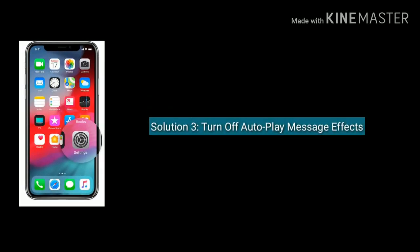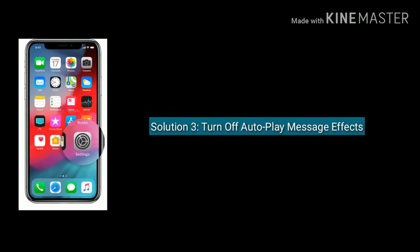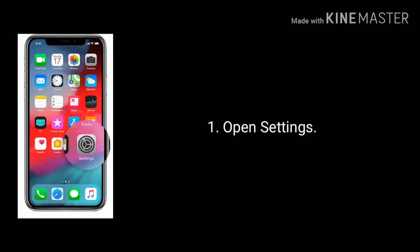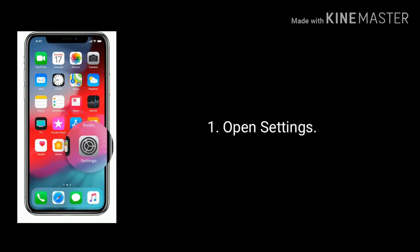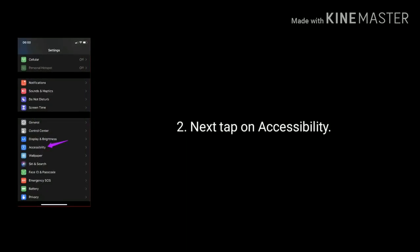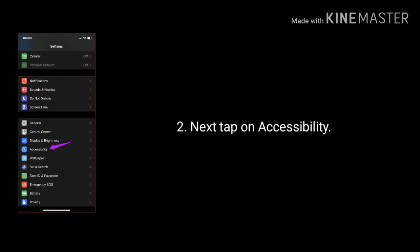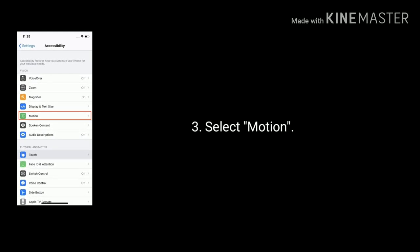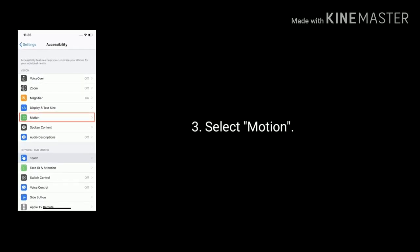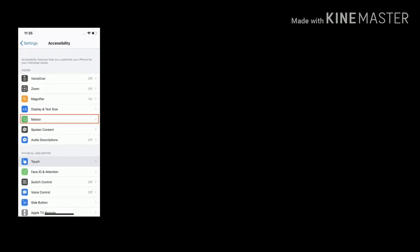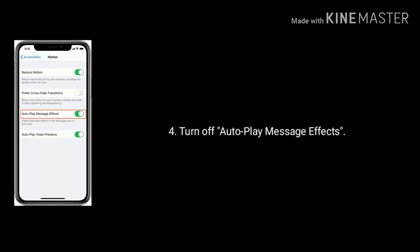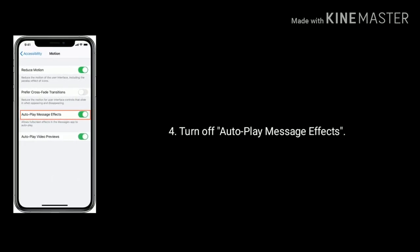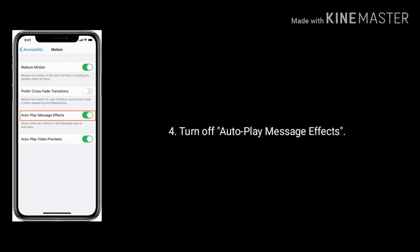Solution 3 is Turn off Autoplay Message Effects. First, open the Settings app. Next, tap on Accessibility. Now select Motion. Find and turn off Autoplay Message Effects.